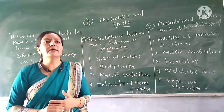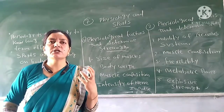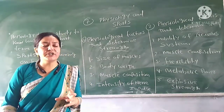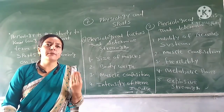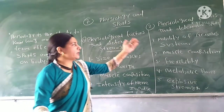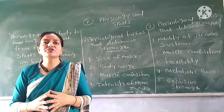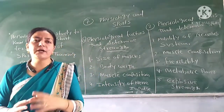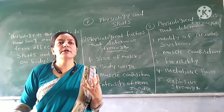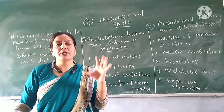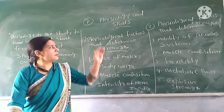The fourth factor is metabolic power. If your metabolism is better, your body will have more energy and power, and your metabolic rate will provide more energy to improve your speed. The fifth factor is explosive strength — if your reaction and strength are more explosive, you can increase your speed in activities like running.